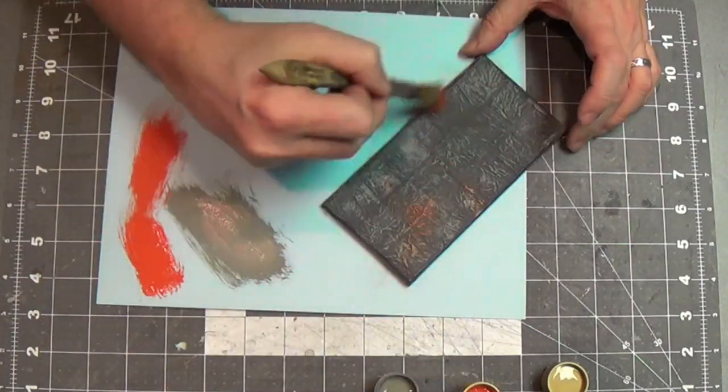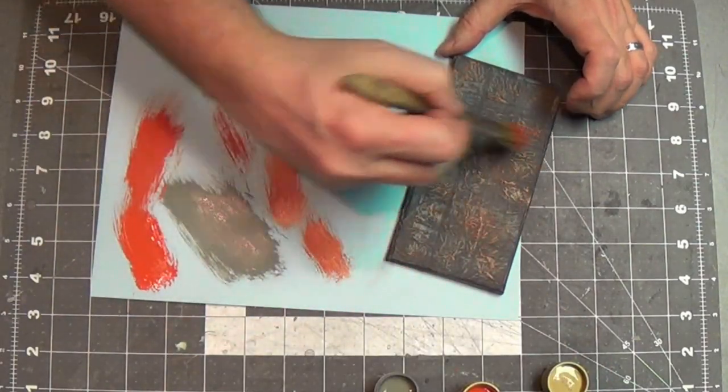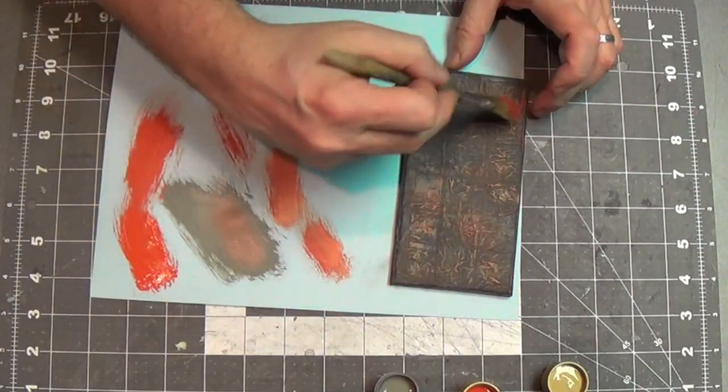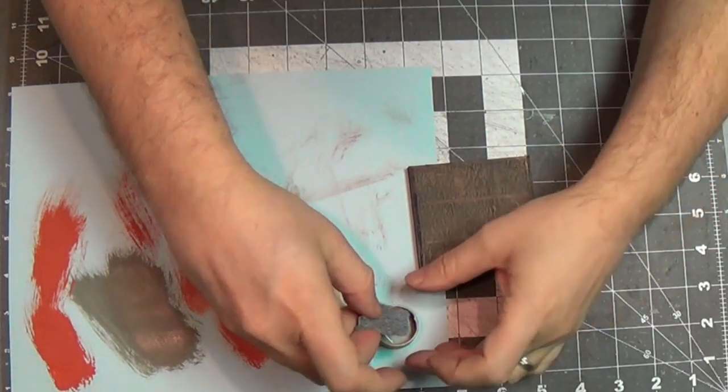Then we use some burnt sienna. A little red there. It looks a little red there in the camera. And some tan. I'm just adding a variation to the stone color.